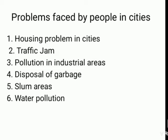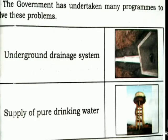Problems faced by people in cities: housing problems, traffic congestion, pollution in industrial areas, disposal of garbage, slum areas, and water pollution — a total of six main problems faced by urban communities. There is no space to build houses, slum areas exist, water gets polluted because of many factories, and traffic causes air pollution.